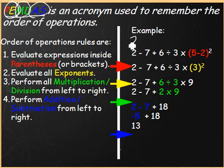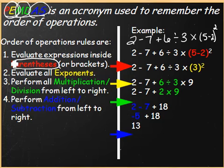Therefore if we want to find the value of the expression 2 minus 7 plus 6 divided by 3 times the quantity 5 minus 2 all squared we would do the order of operations. The first thing we would evaluate is our parentheses. Recognizing that we have 5 minus 2 in parentheses which gives us 3. Next we would evaluate our exponents. Therefore we would take 3 squared or 3 times 3 which is 9.